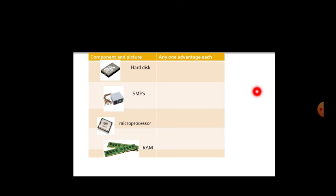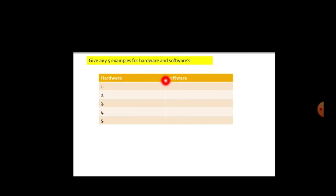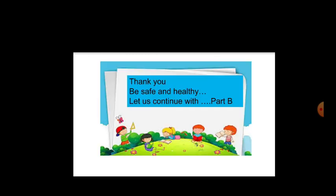Here is a small activity: given images of components, list one advantage each of hard disk, SMPS, microprocessor, and RAM. Also give five examples each of hardware and software. We will continue with Part B, covering more internal parts inside the CPU. Thank you, be safe and healthy.